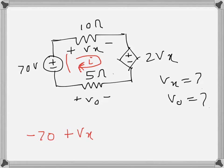Plus, and then 2vx—this one is also a drop—so 2vx, and then v naught is a rise. So like that, and zero. So 3vx minus v naught is equal to 70. That is our first equation.